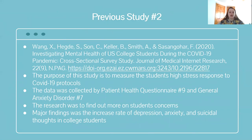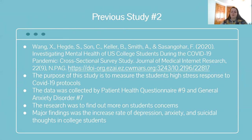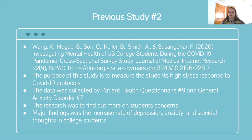The second study aimed to measure students' high stress response to COVID-19. They used two scales: the Patient Health Questionnaire and the Generalized Anxiety Disorder scale. The GAD had a bigger focus on anxiety, while the PHQ covered overall mental well-being. They found an increased rate of depression, anxiety, and even suicidal thoughts among college students.